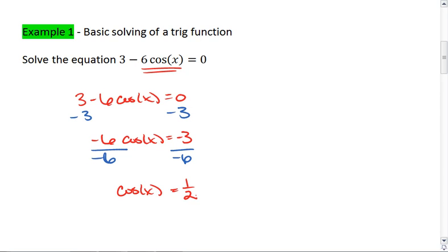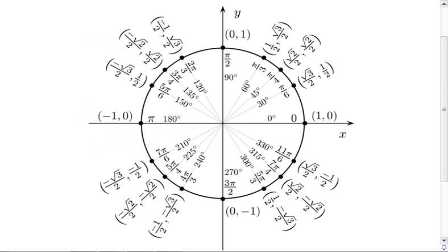And this means if we were to go to our unit circle, we're solving for when cosine is 1 half. And that occurs up here at pi-thirds, and also down here at 5 pi-thirds. Thus, our two possible answers are pi-thirds and 5 pi-thirds.